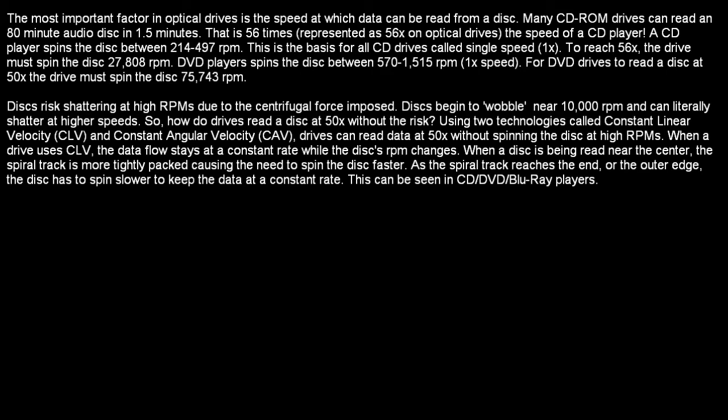A DVD player spins the disk between 570 to 1,515 RPMs for single speed. For a DVD drive to read a disk at 50x, the drive must spin the disk 75,743 RPMs. But disks risk shattering at high RPMs due to the centrifugal force imposed. Disks begin to wobble near 10,000 RPMs and can literally shatter at higher RPMs.